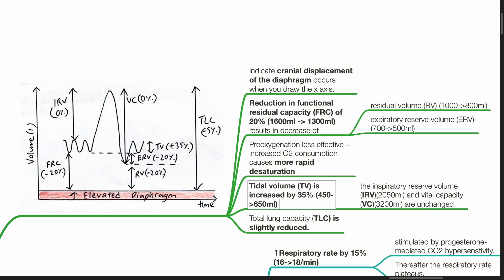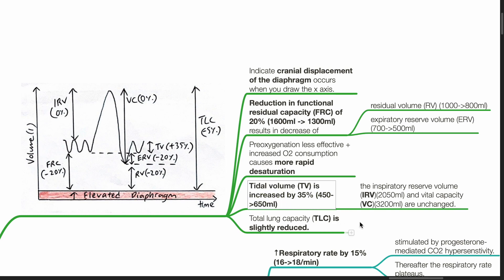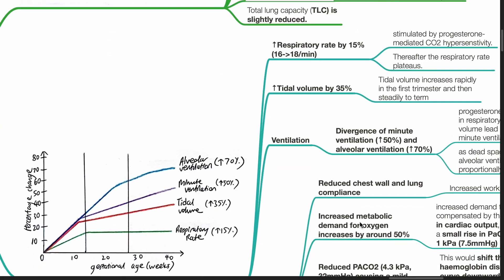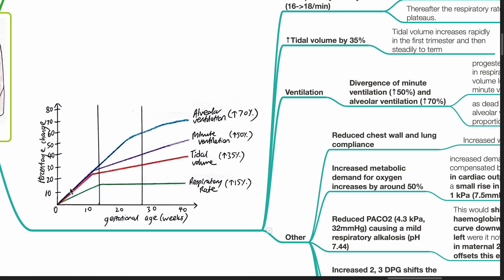Total lung capacity is slightly reduced. This graph shows that from early to late pregnancy, there is 70% increase in alveolar ventilation, 50% increase in minute ventilation, 35% increase in tidal volume, and 15% increase in respiratory rate.